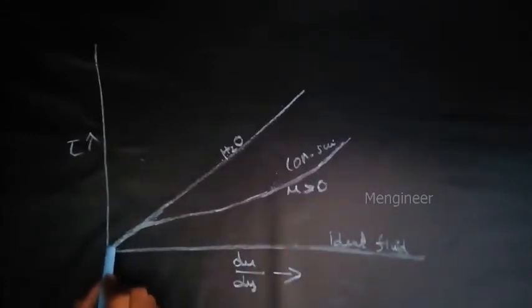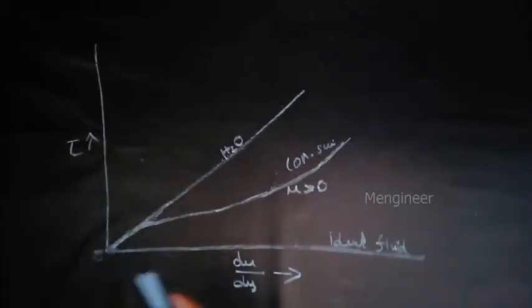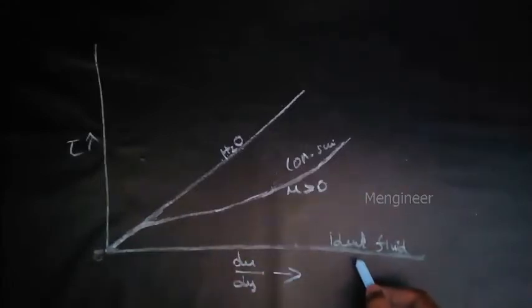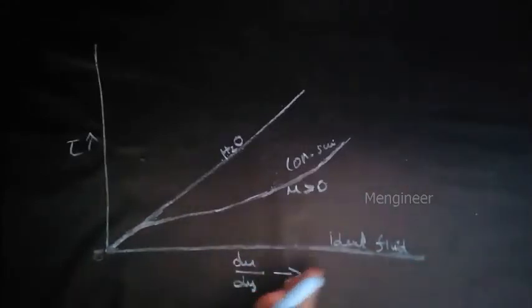For little shear stress, so this is the very little amount that is starting. Almost it is 0 only. So for no shear stress, it will deform continuously. So it will flow continuously. Imagine like the type of fluid.